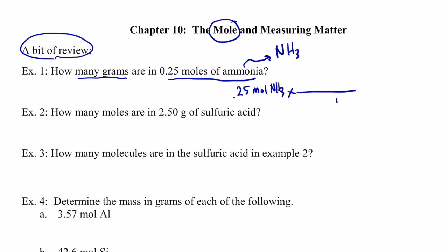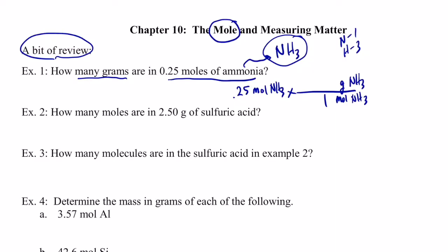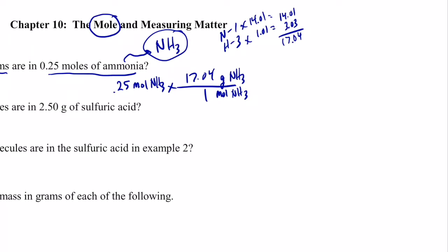So if I have 0.25 moles of ammonia NH₃, I multiply by a conversion factor — moles of ammonia on the bottom and grams of ammonia on top, one per mole. To find grams, we need the molecular weight: nitrogen is 14.01 and each hydrogen is 1.01, so we get 14.01 plus 3.03 equals 17.04 grams per mole.